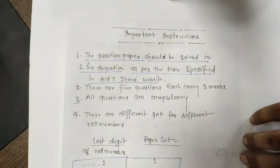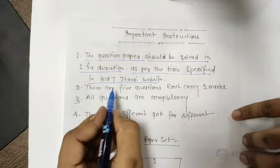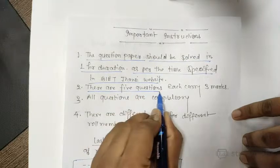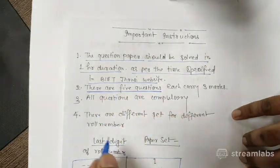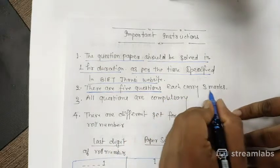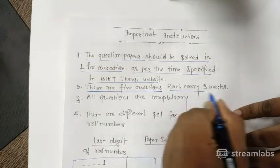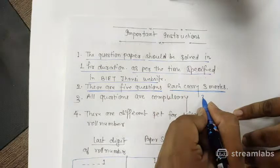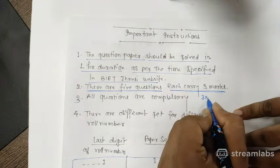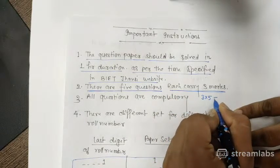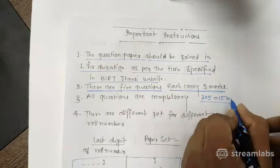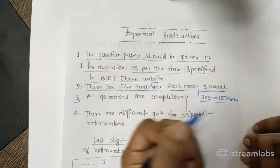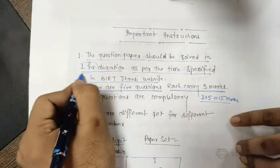There will be 5 questions in the question paper. The total marks in the question paper is 15, so each question will carry 3 marks — 3 marks each for 5 questions, making this a 15-mark paper of 1 hour duration.